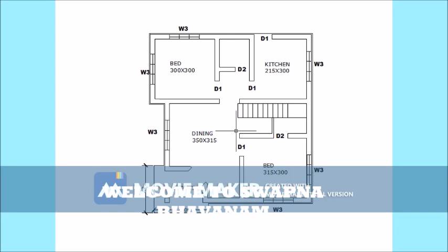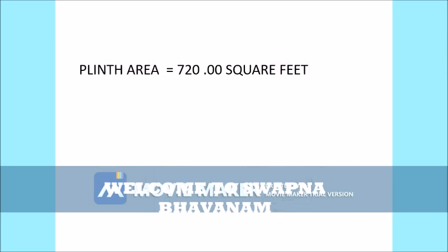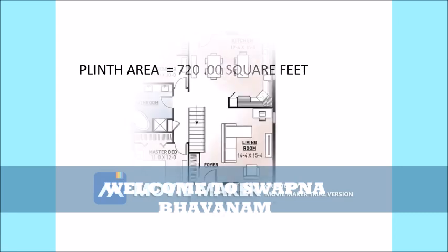This is 720 square feet. The plan features a sit-out, a bedroom, a kitchen, a dining hall, and two toilets, along with additional bedrooms.